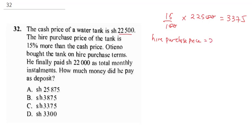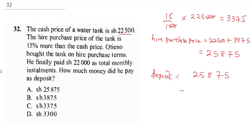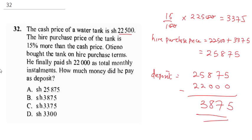The hire purchase price is 22,500 plus 3,375, which equals 25,875. He paid 22,000 as total monthly installments, so to get the deposit we do 25,875 minus 22,000, which gives us 3,875. That is what he paid as deposit. The correct answer is B.